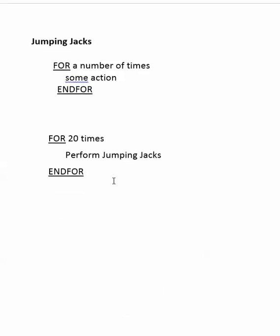Here's another quick example using jumping jacks. In pseudocode, we might use a for/end loop — for x number of times, perform this action; once the number of times have been completed, end that action. An everyday example might be: for 20 times, perform jumping jacks. When the 20 times is complete, it ends the loop.